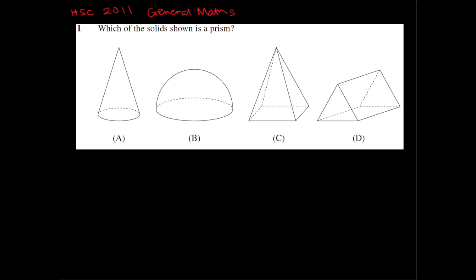A prism is a solid object that has two identical ends and all flat sides. So if you look at A, we have a flat side, it's a circular base, but we don't have an identical end on the top. Instead we have this point and a curved surface. So this isn't a prism, this is a cone.